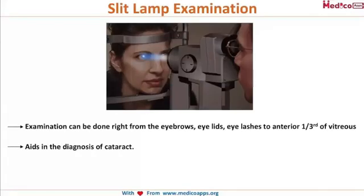How do you examine cataract? Through slit lamp examination, you can stage the cataract, find out the type — whether it's cortical, nuclear, posterior subcapsular, or whatever type — and confirm the diagnosis of cataract.